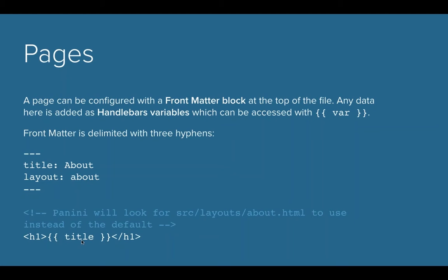In this example, we've defined a variable called 'title' with the text 'About'. Down on your page, you'll have an h1 with the Handlebars include for 'title', and when Panini is running — basically every time you save — it looks for this variable and injects the text right in. It may sound complicated, but it's actually really simple. It's a way to inject different content onto each page using variables.